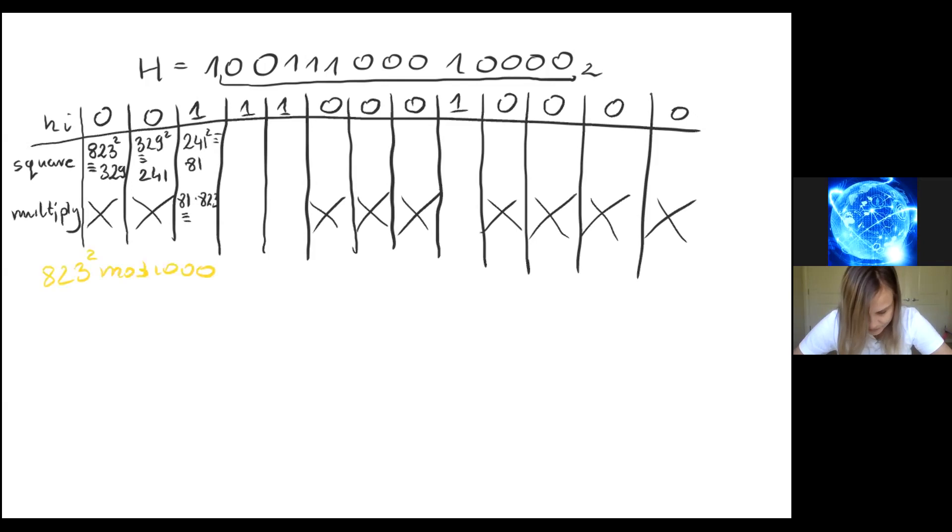This is congruent to 663. And then we have 663 squared, congruent to 569. Then 569 times 823, this is congruent to 287.